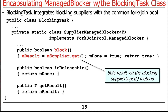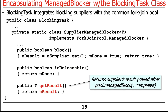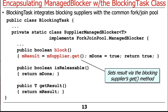Here's the block method — this is what does the heavy lifting. We call the supplier parameter's get method. A supplier is a Java functional interface with a single method called get. When called, it does whatever it's told — most likely block, which is the whole purpose of this. It blocks until we get a result back, then sets done to true and returns true. The isReleasable method just returns mDone — false on first pass, true once done.